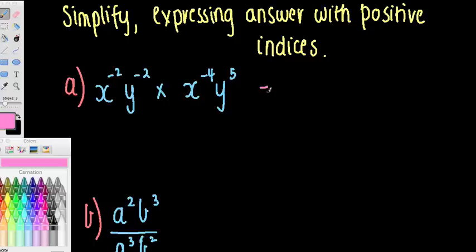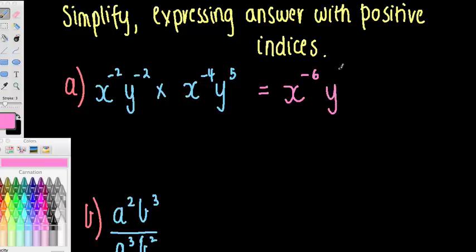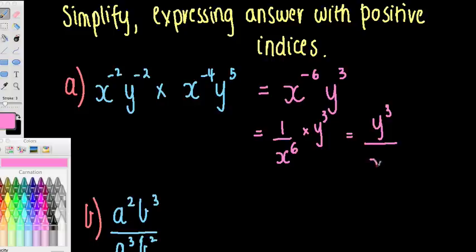For this first one, I'm going to look for the same base being multiplied and add those indices. For the x terms: x to the negative 2 times x to the negative 4 gives negative 2 take 4, so x to the negative 6. For the y terms: y to the negative 2 times y to the positive 5 gives negative 2 plus 5, so y to the 3. Expressing with positive indices, this equals 1 over x to the 6 times y to the 3, which simplifies to y cubed over x to the 6.